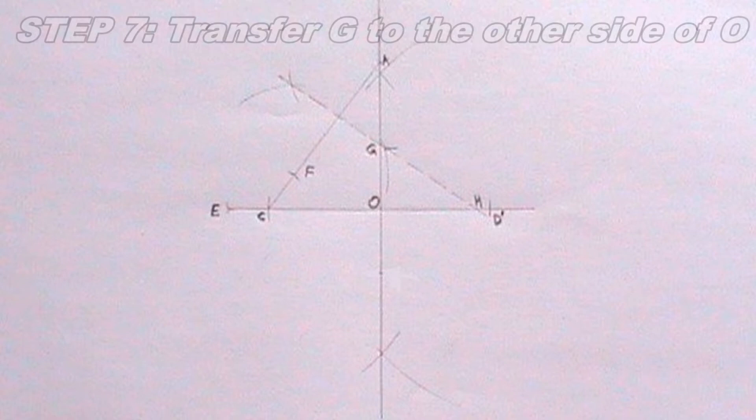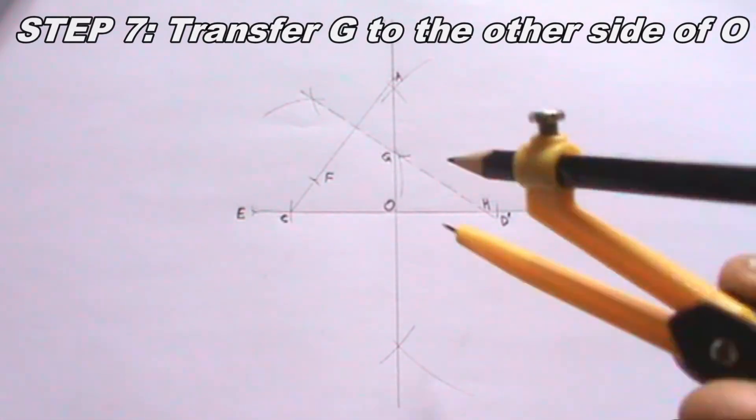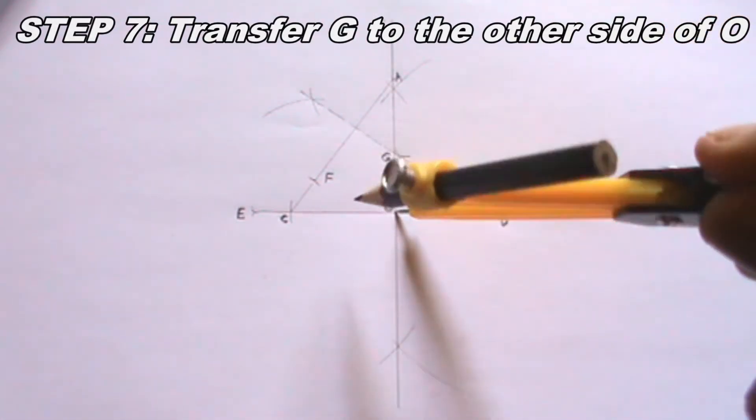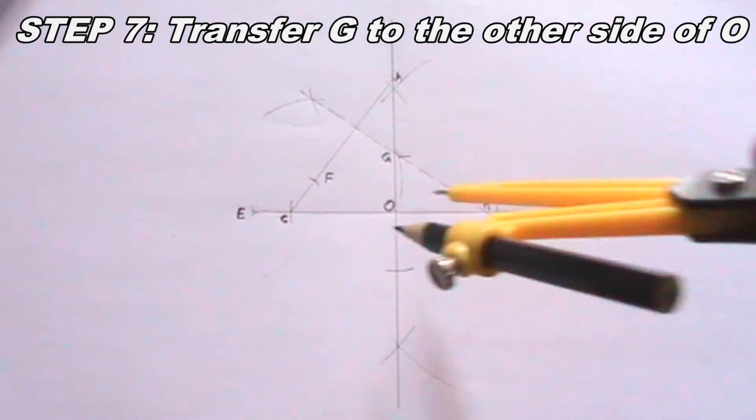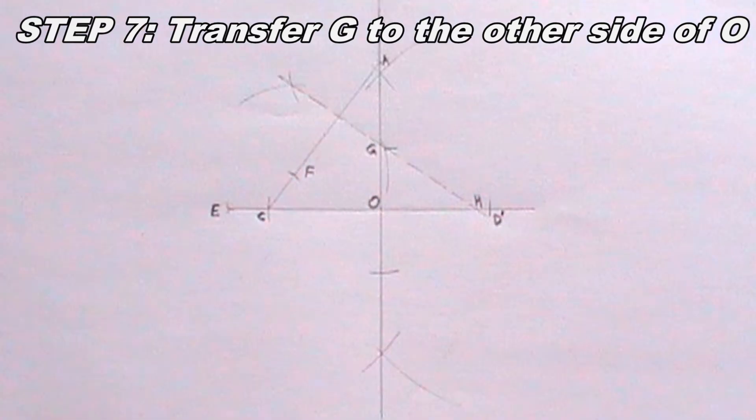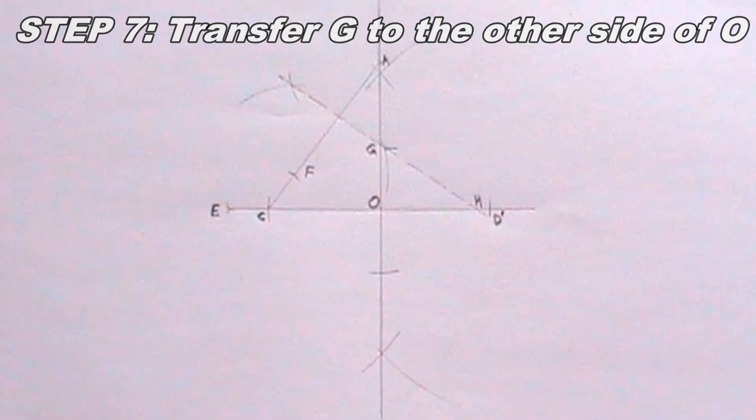Having done that, I will transfer G to the other side of O. This step can be done this way. I will label the point I just marked G1.